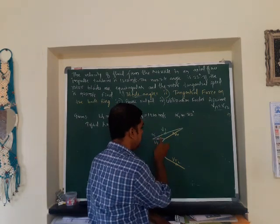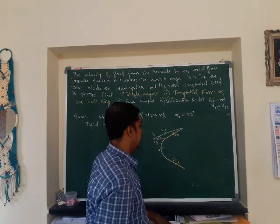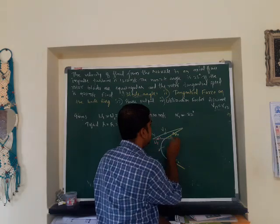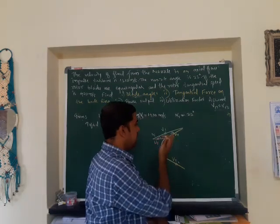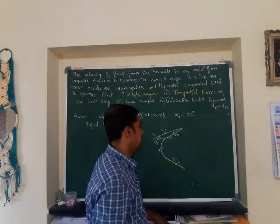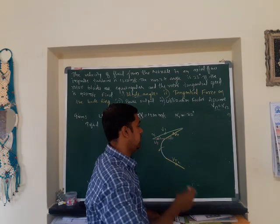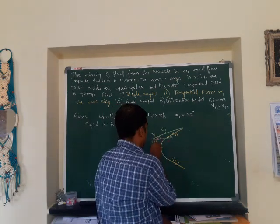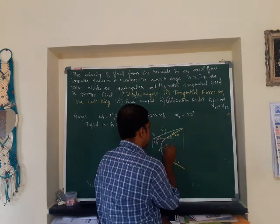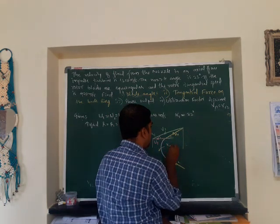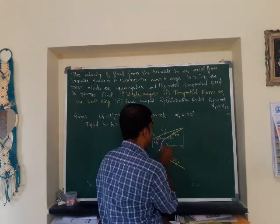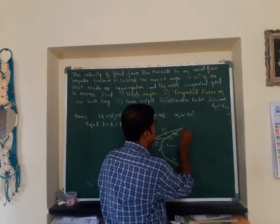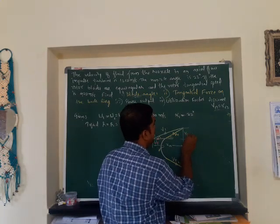Alpha1 is the angle between absolute velocity V1 and tangential velocity. Beta1 is the angle between relative velocity and tangential velocity, measured in the direction of rotation of the rotor. The horizontal component of absolute velocity V1 is VU1, and the vertical component of absolute velocity V1 is VF1.